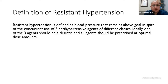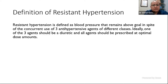When we define resistant hypertension, it means that blood pressure remains above the target even after giving three antihypertensive drugs of different classes — one calcium channel blocker, one angiotensin receptor blocker or ACE inhibitor, and one diuretic — with most drugs prescribed at optimum doses. Suboptimal doses or regimens not including a diuretic normally do not fall in the category of resistant hypertension.